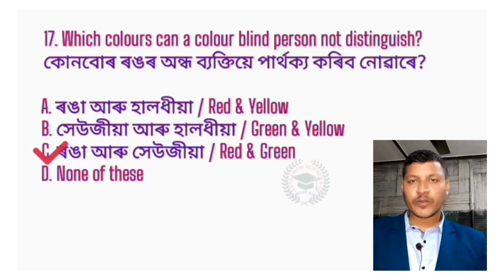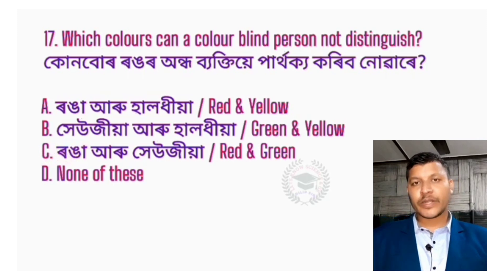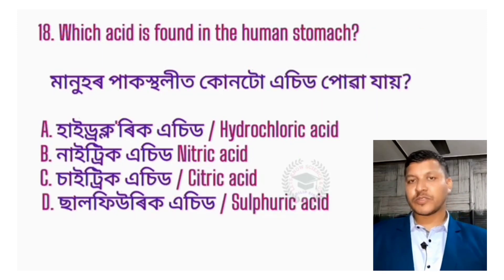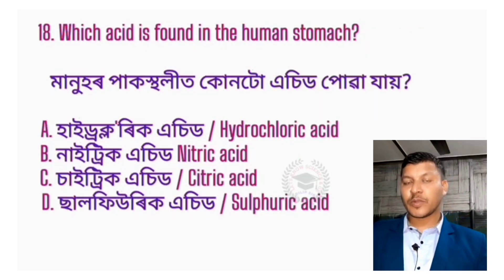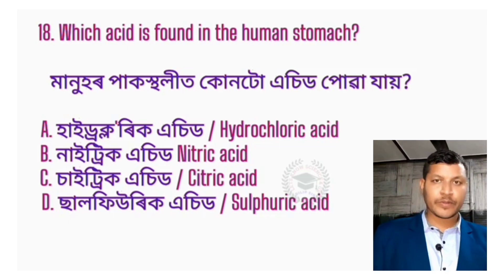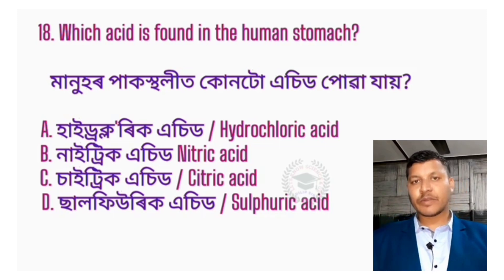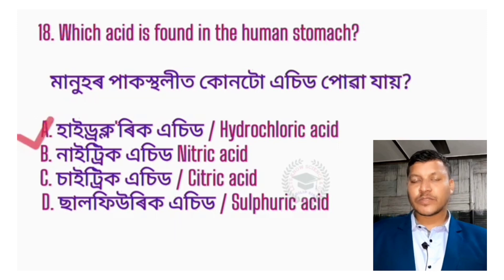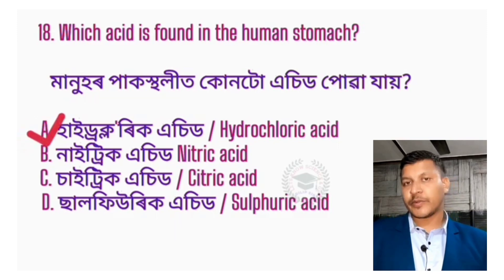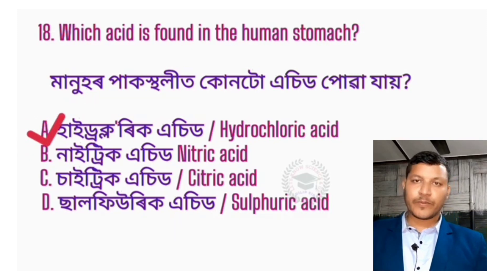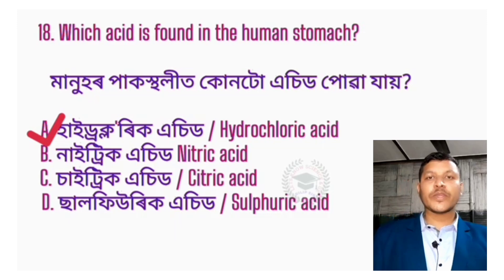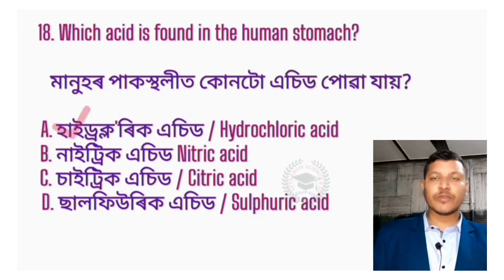Question number 18: Which acid is found in the human stomach? Options: hydrochloric acid, nitric acid, citric acid, and sulfuric acid. The answer is hydrochloric acid — that is the acid found in the human stomach.